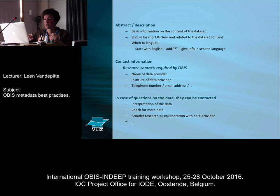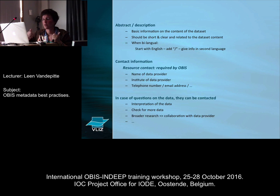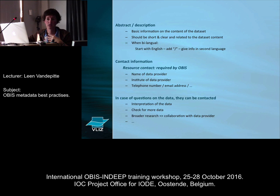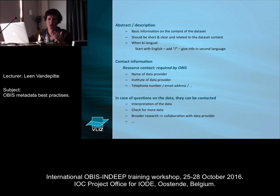Very important also is contact information. What is always required as a minimum is a resource contact — basically the person responsible for the dataset. If there are any questions about the content, who do we contact to get more information? That would be a person, an institute, and preferably a phone number and email address. That person can be contacted if there are more questions — whether from us as data managers or later from a user who downloads the data through OBIS and finds something unclear.